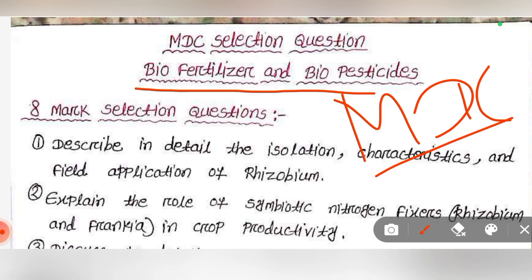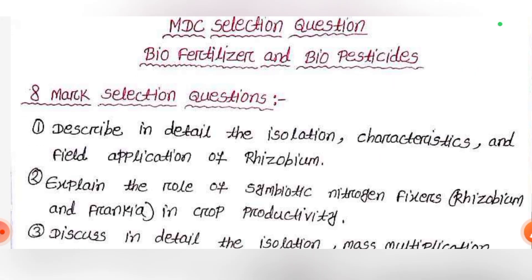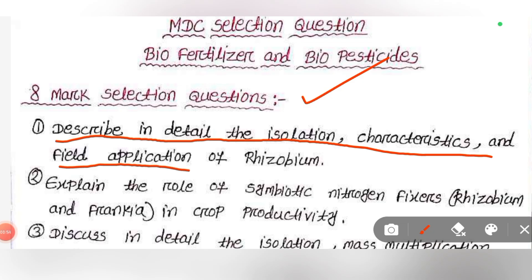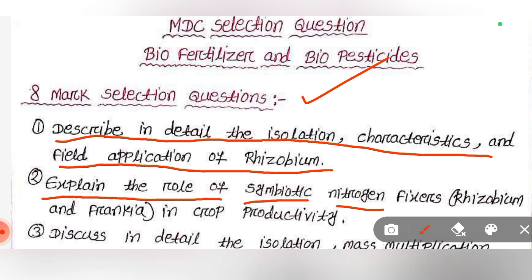Let's talk about the discussion. Next question: describe in detail the isolation characteristics and field application of Rhizobium. Also, explain the role of symbiotic nitrogen fixers in crop productivity.